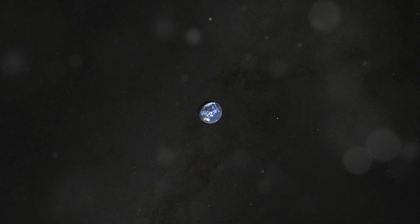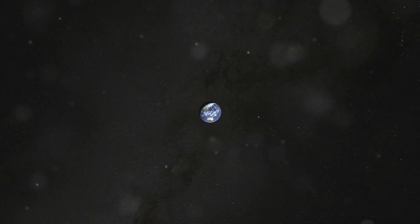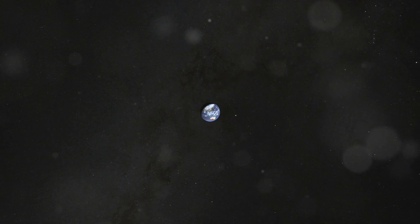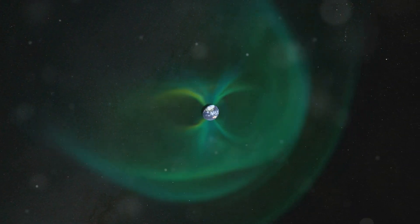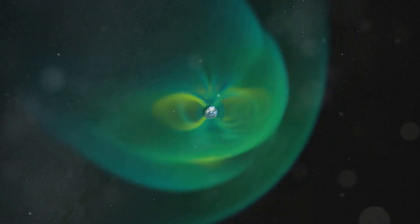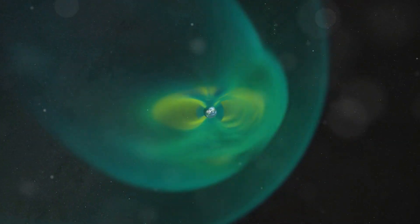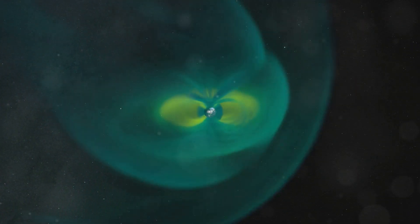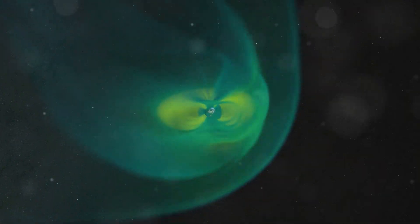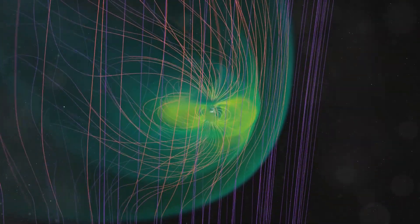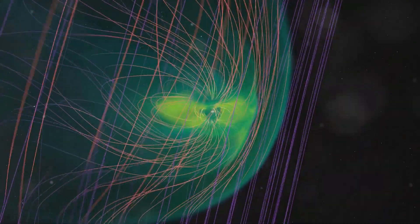Since we began measuring it, Earth's magnetic field has weakened by about 9% over the past 170 years. That might not sound like a lot, but on a planetary scale, it's a big deal. A weakening field means more vulnerability to solar storms, more glitches in space tech, and yes, more growth in anomalies like the SAA.